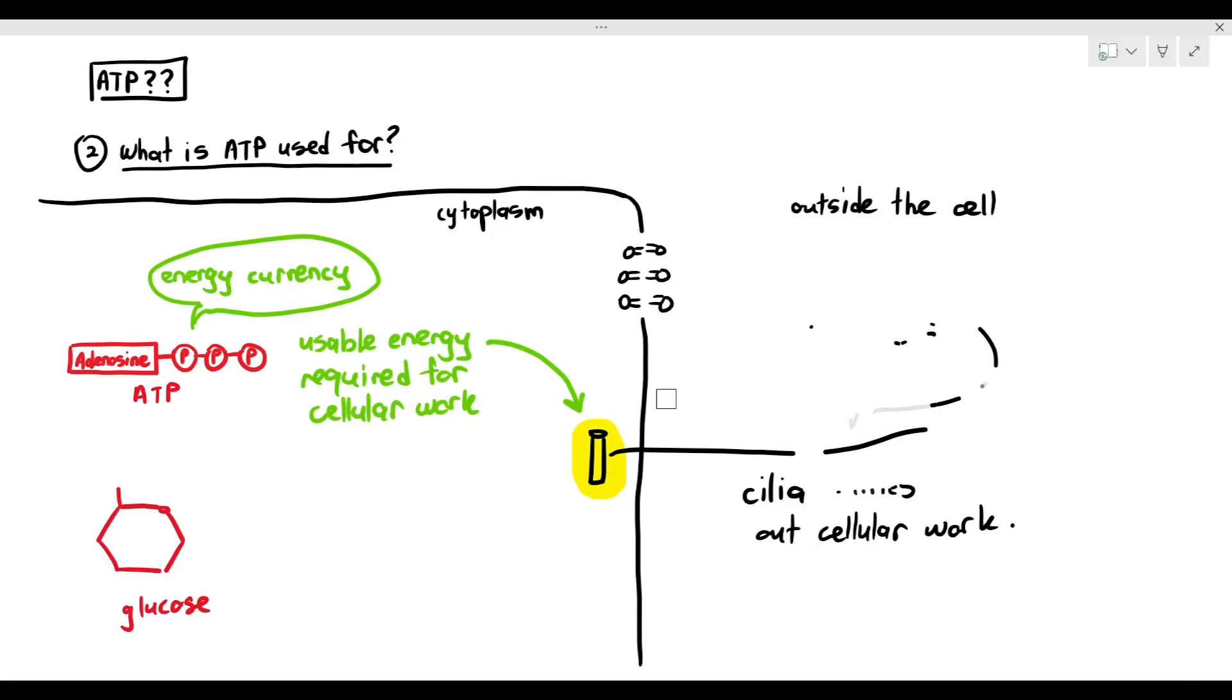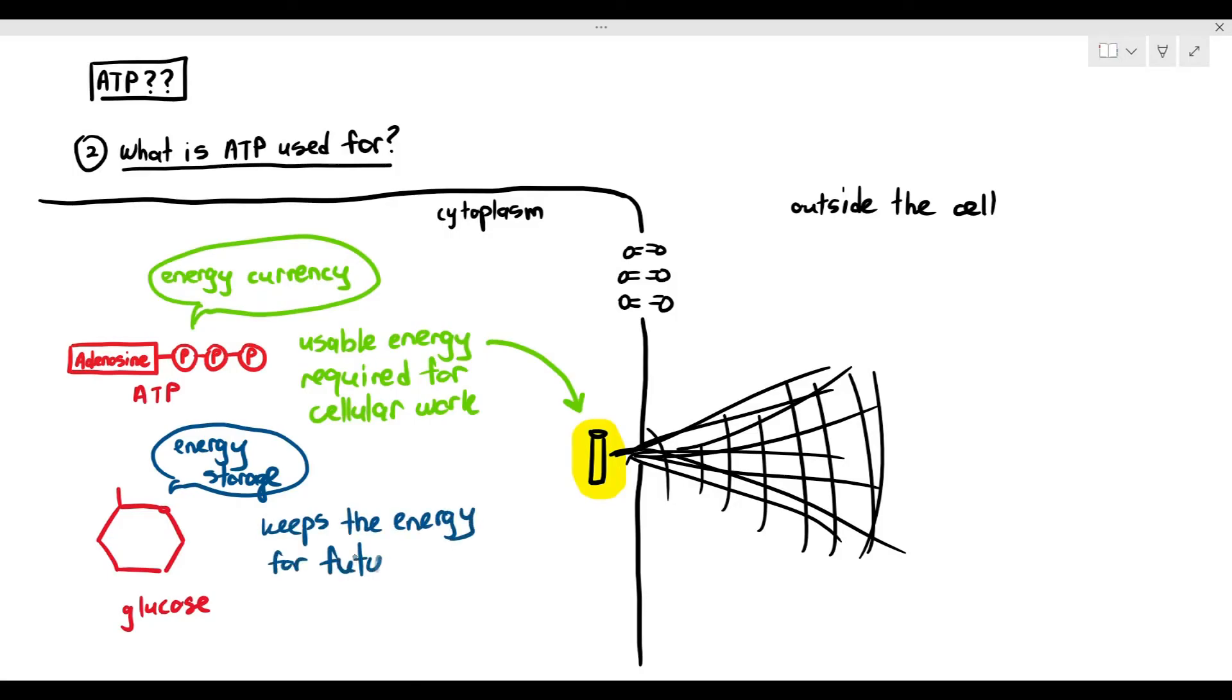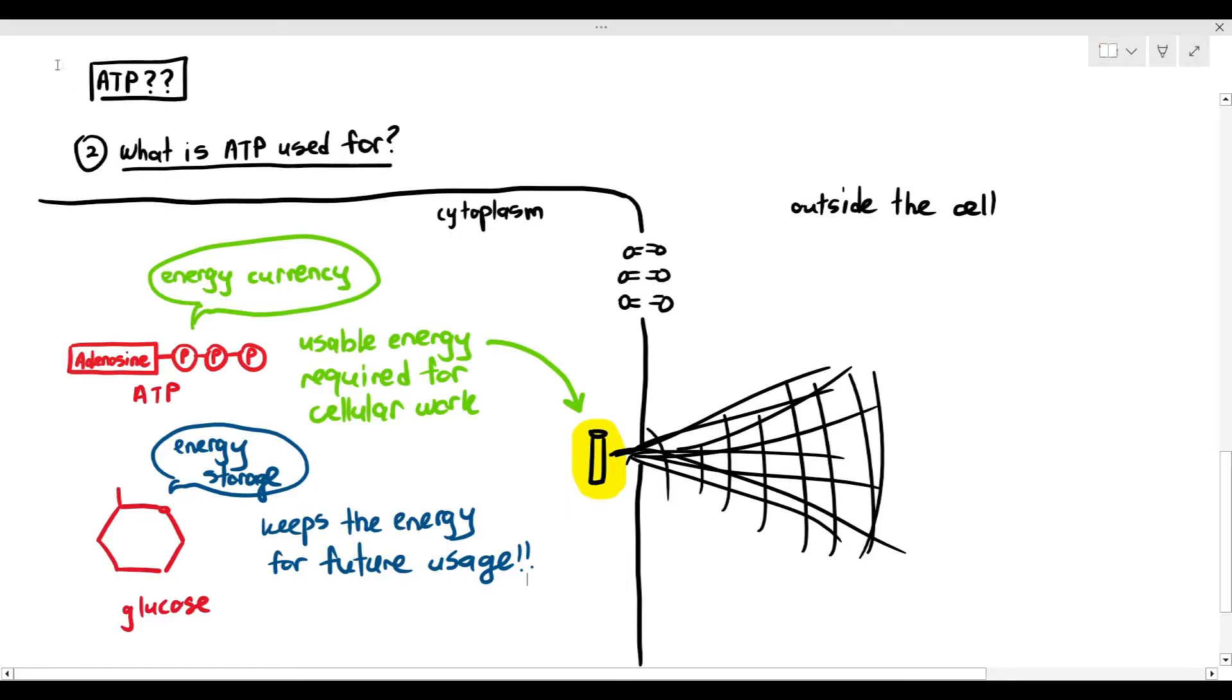What needs to happen is, the ATP is the one that is actually the usable energy required for cellular work. Because when the ATP goes over to the cilium, the cilium is like, I can use this energy molecule.